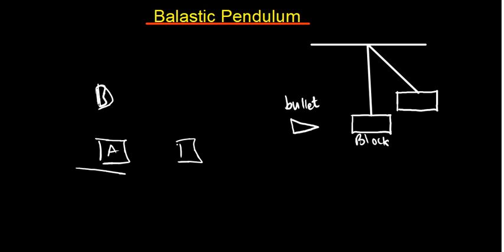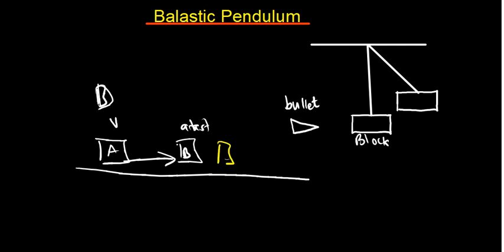If these things are moving in a straight line, and block B is initially at rest — meaning the initial velocity is zero — and block A comes into block B, what is going to happen is that these two guys are going to start moving, but each block will have its own separate final velocity. That is elastic collision.